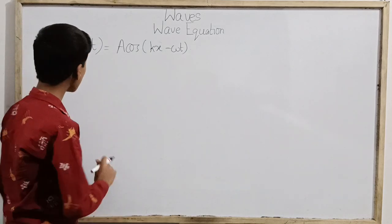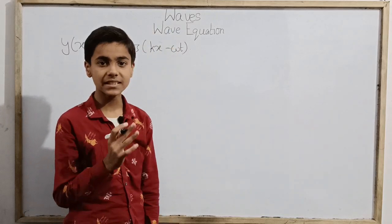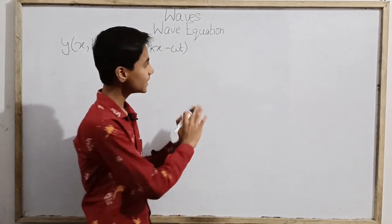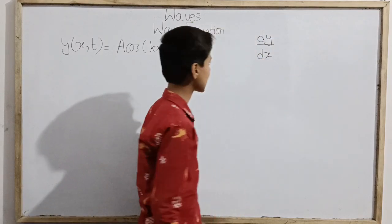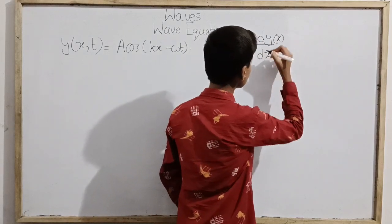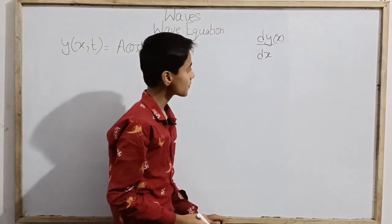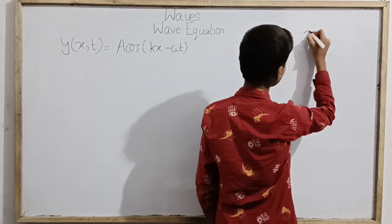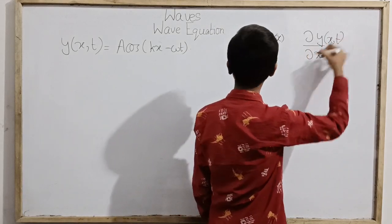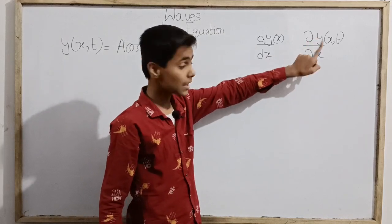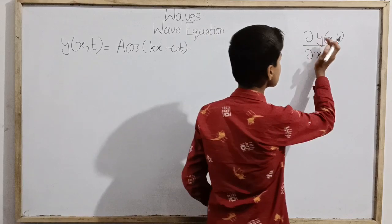Now I am going to take the partial derivative — partial differentiation. If you are not familiar with this term, let me briefly introduce it. Normally we do differentiation as dy/dx, where y is a function of one variable. But when y is a function of two variables, like x and t, we cannot use normal differentiation methods — we need partial differentiation. Partial differentiation with respect to x means we treat t as constant and differentiate normally with respect to x.